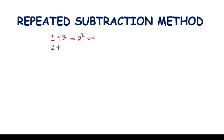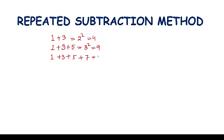When we add one plus three plus five we get three squared, equal to nine. When we add one plus three plus five plus seven we get four squared, equal to sixteen. So in reverse order, when we are subtracting, we can find the square root.